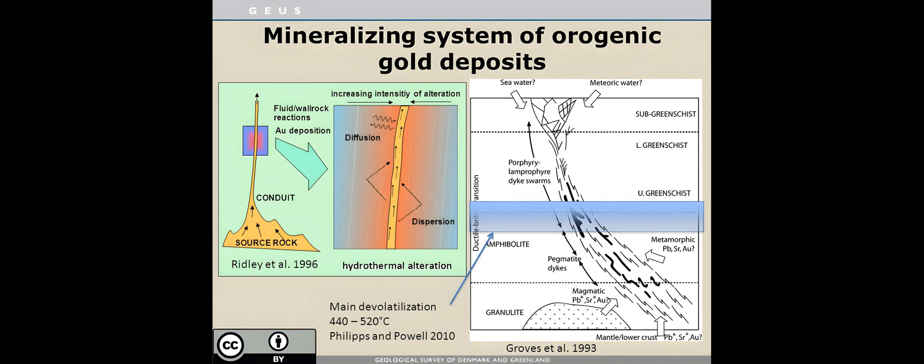The subcrustal fluid source model is more robust as it describes both a source and a mechanism, but also has limitations as many Precambrian gold deposits do not have thick sedimentary succession.